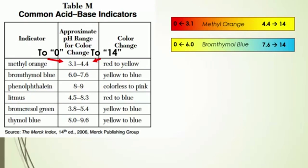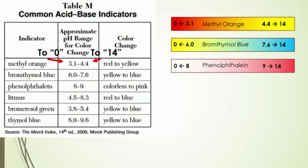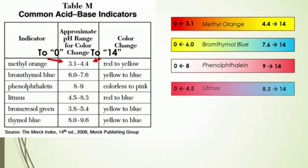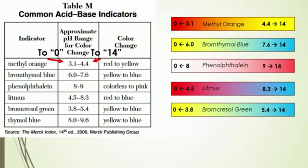Continuing to apply this trend, phenolphthalein is going to be colorless at a pH of 0 to 8, and it will be pink at a pH of 9 to 14. We can just continue to apply this trend to the other indicators.